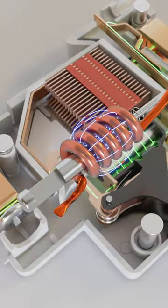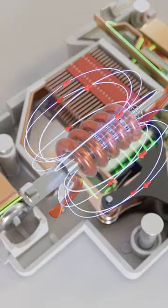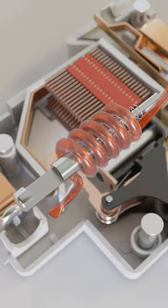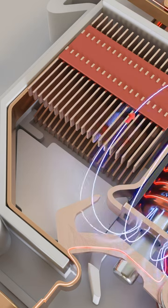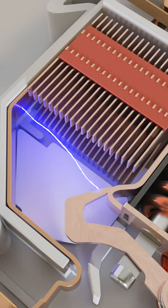It utilizes the concept of electromagnetism to automatically trip the circuit in case of a short circuit. An arc chamber is employed to safely dissipate the energy of an arc formed during the tripping of a miniature circuit breaker.